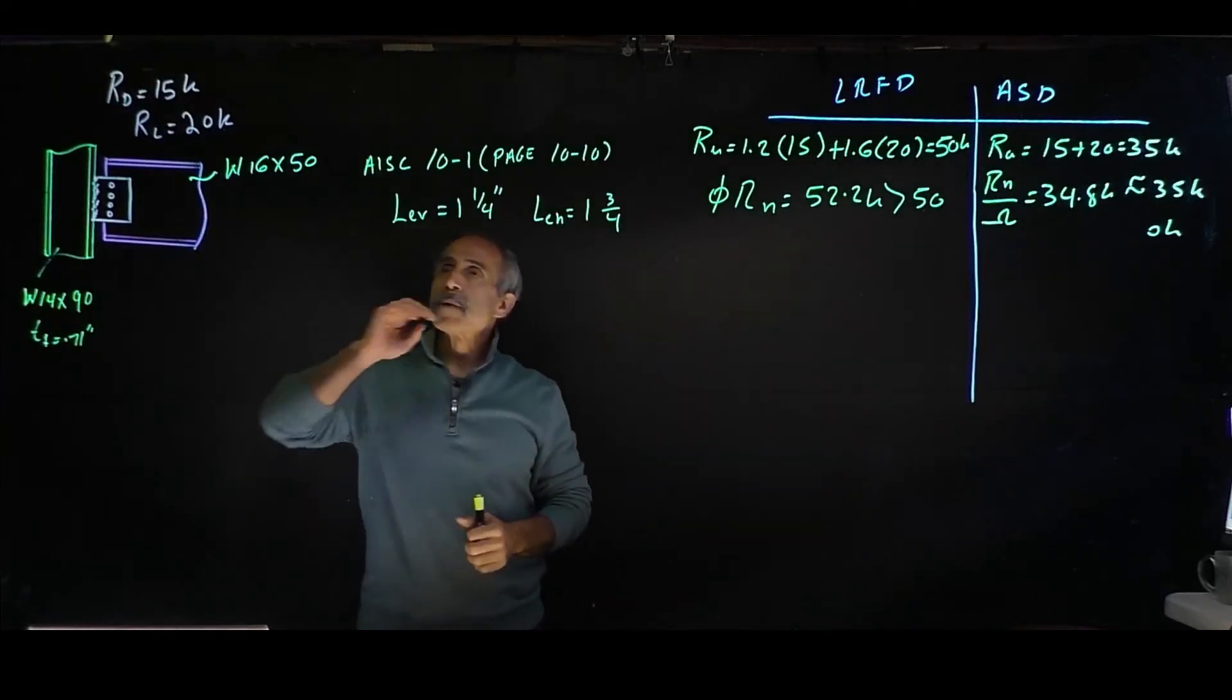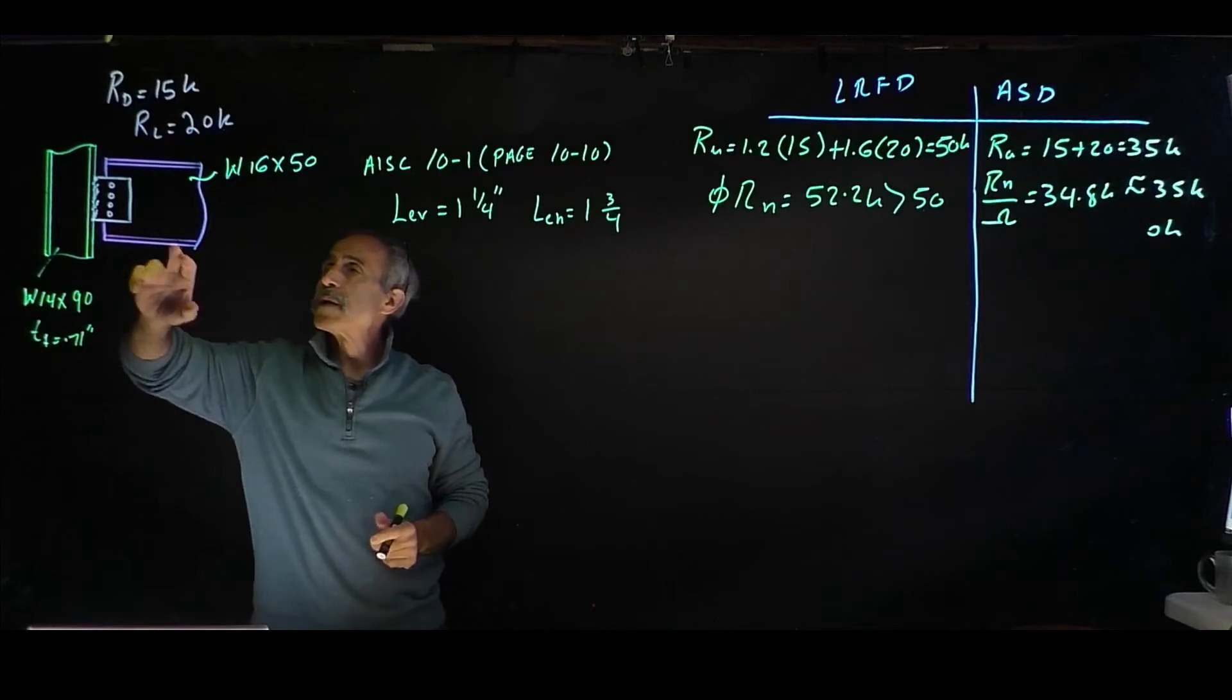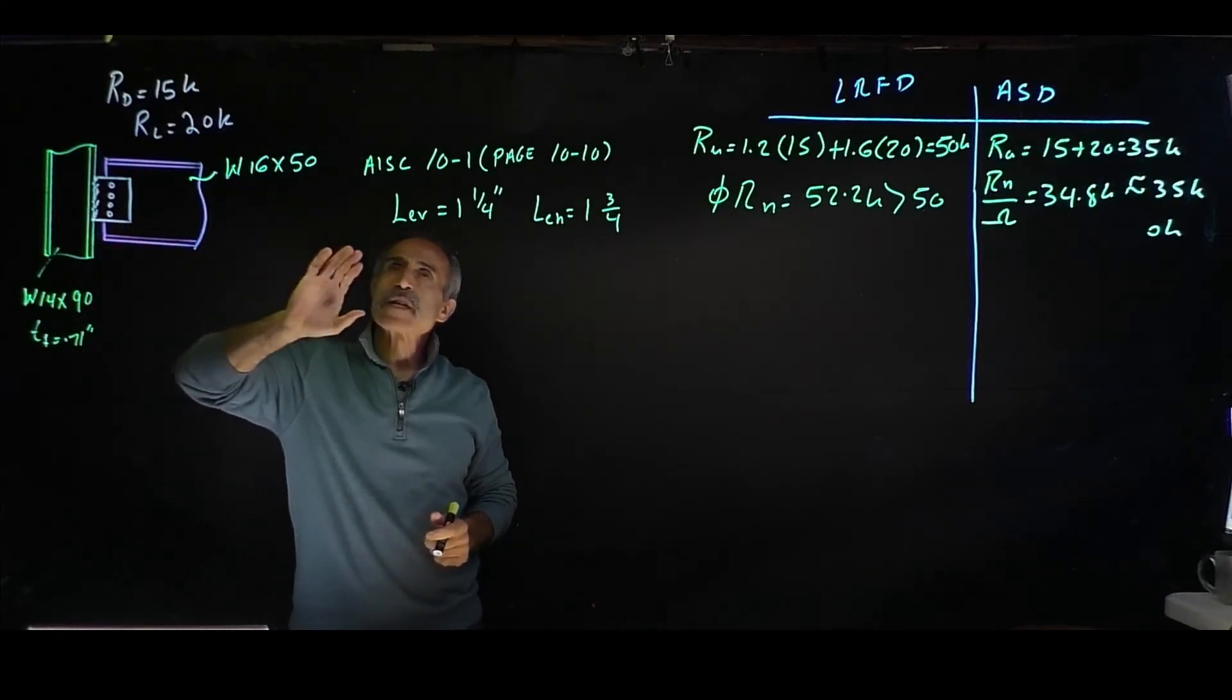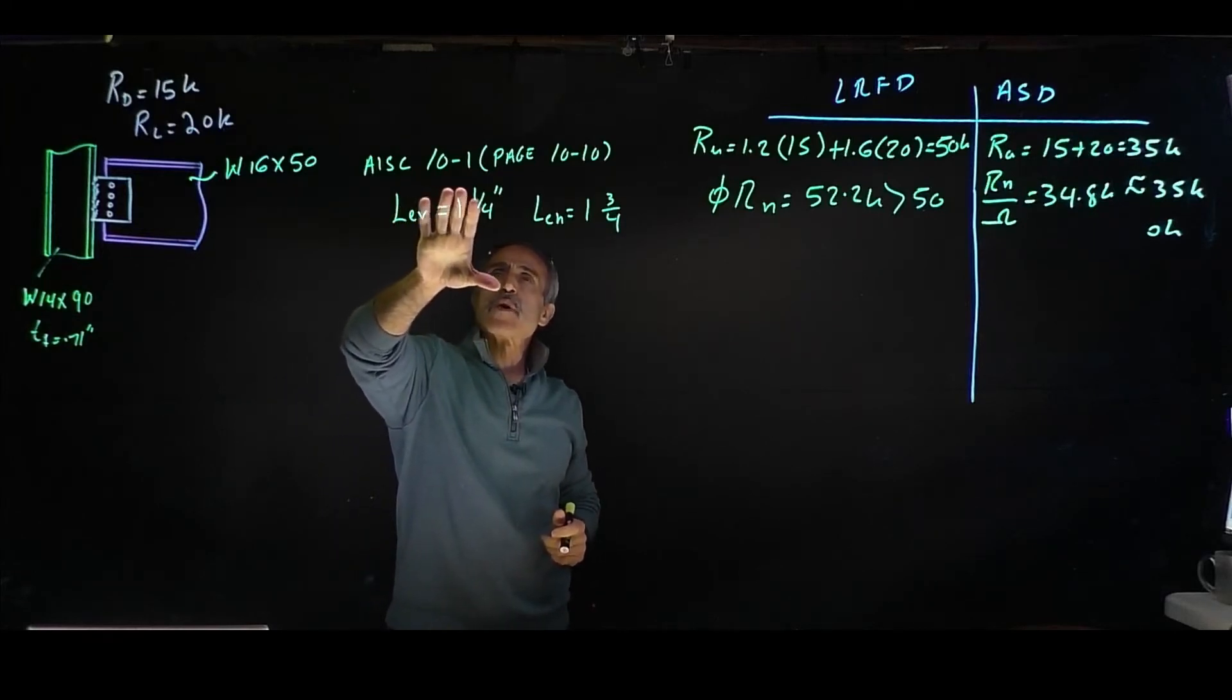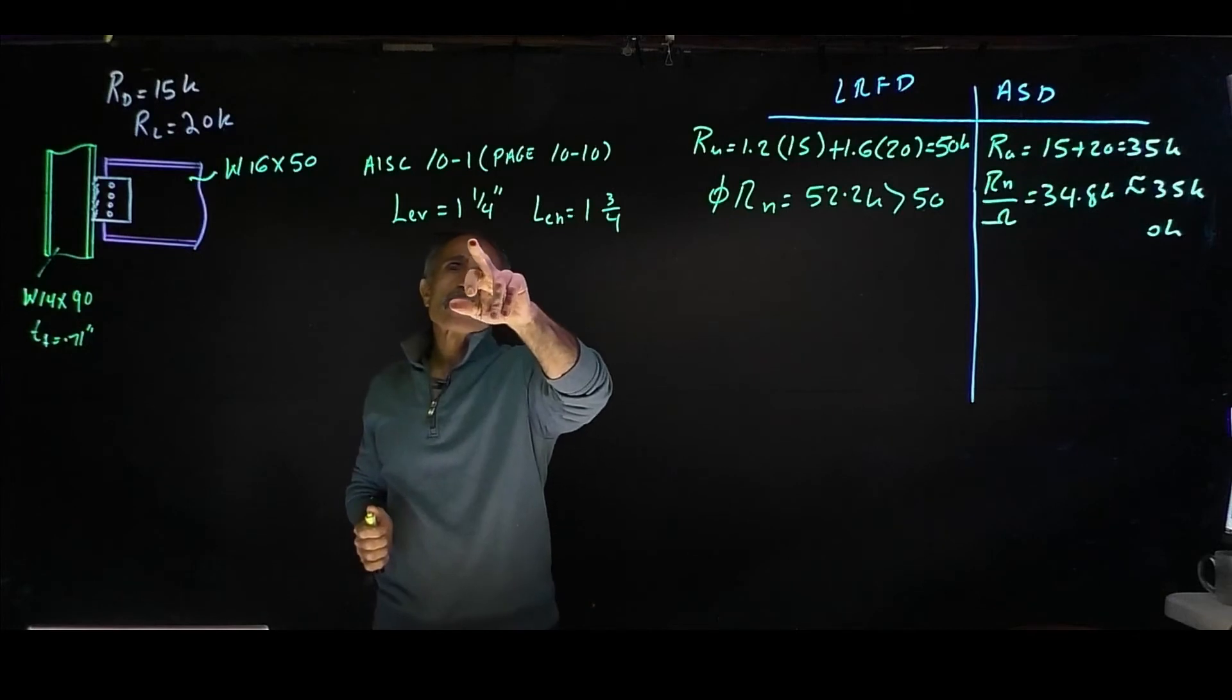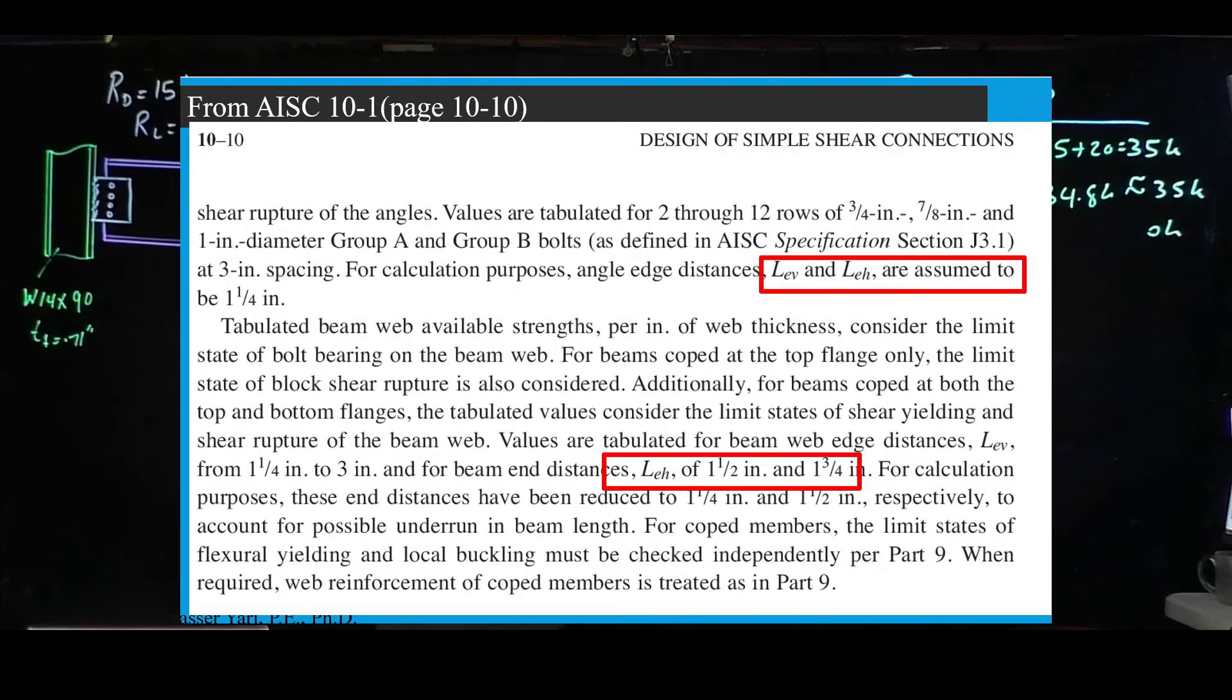Our beam is uncoped. That means we did not cut anything out to make it fit. If we look at ASD 10.1 page 10-10, it tells us Lev should be 1.25 and Leh should be 1.75.